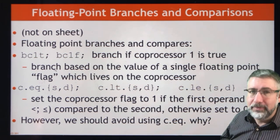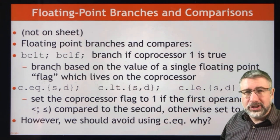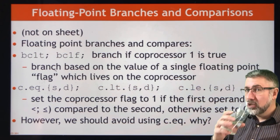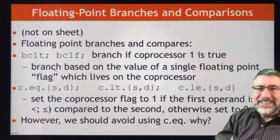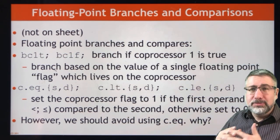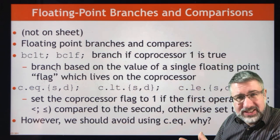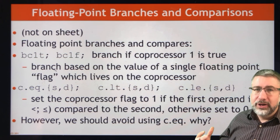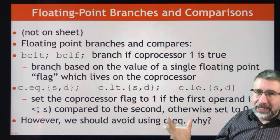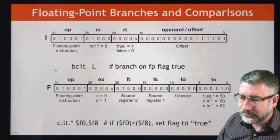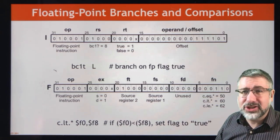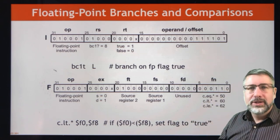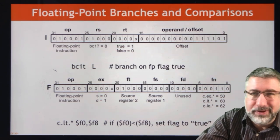Here's a good question for an exam: C.EQ, compare for equality of floating point numbers, exists as an instruction but we shouldn't use it. Why? Because it's possible to get two numbers that are close enough to being equal for our purposes but not exactly equal as floating point numbers. So we should instead compare for the difference to be less than some epsilon. That's a general overview of what MIPS implements for floating point numbers — stick with integers most of the time would be my general advice.